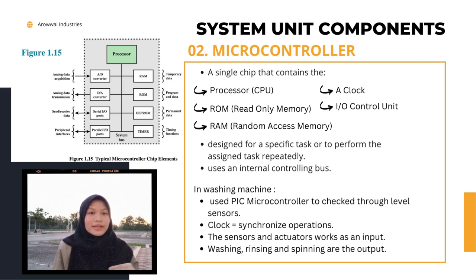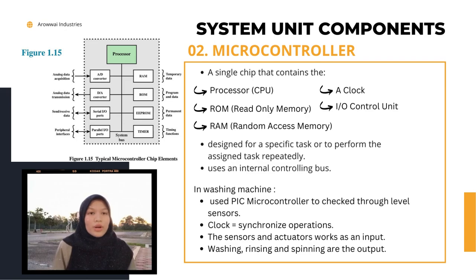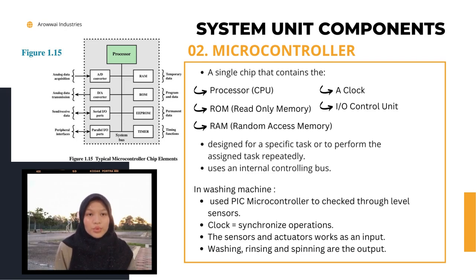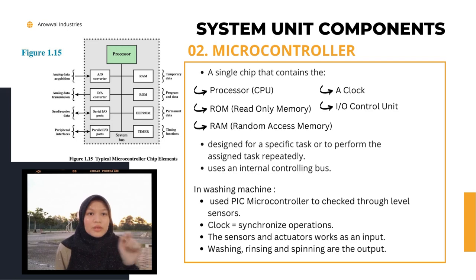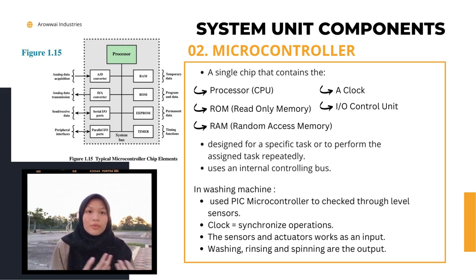A clock is used to synchronize operations. One of the sensors and actuators in a washing machine is level sensors and motors, which work as input, while washing, rinsing, and spinning — the cycle process in the washing machine — are the output.